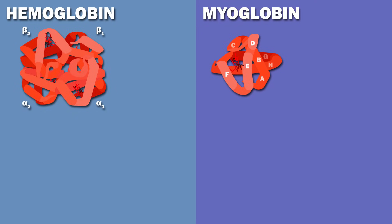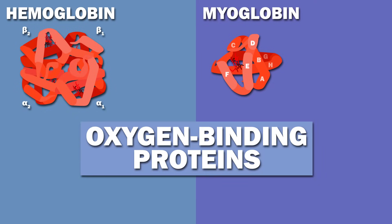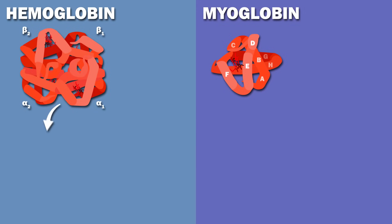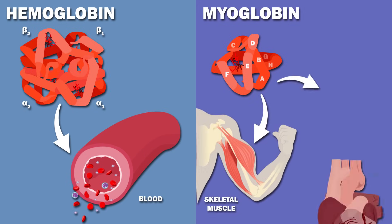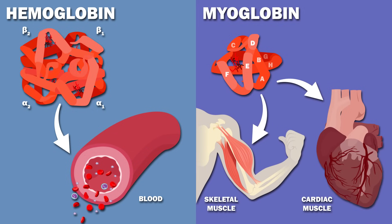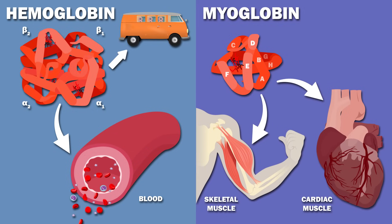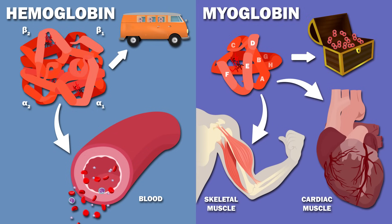Hemoglobin and myoglobin are oxygen-binding proteins. Hemoglobin is found in blood, and myoglobin is abundant in skeletal and cardiac muscle. Hemoglobin is an oxygen transporter, and myoglobin is an oxygen storer.